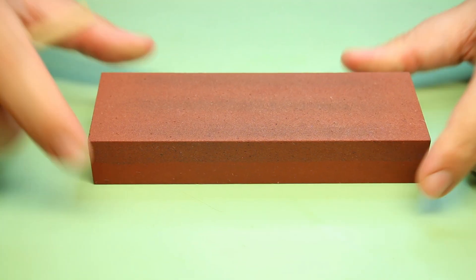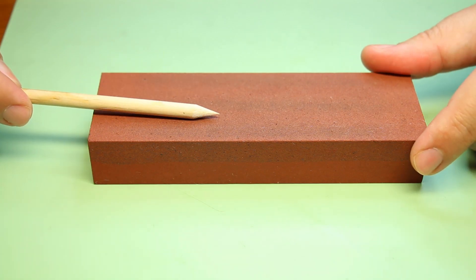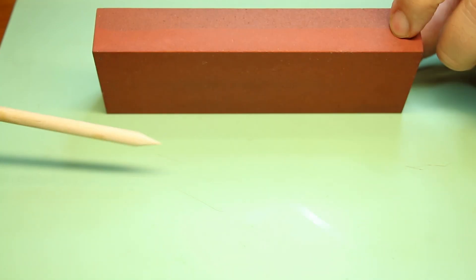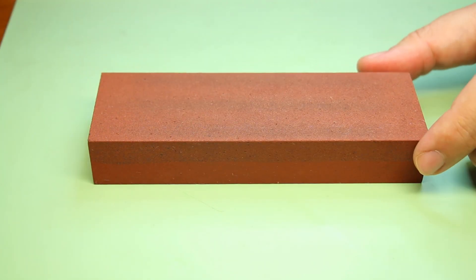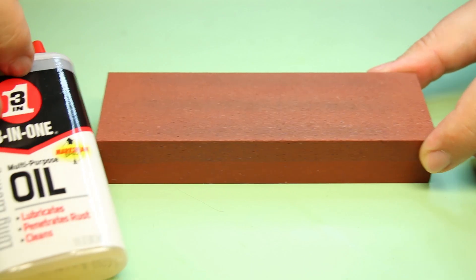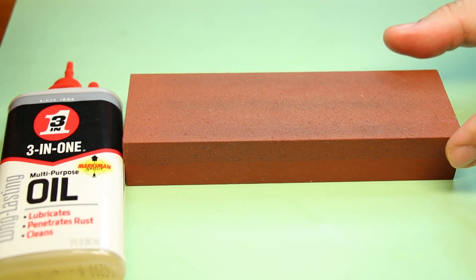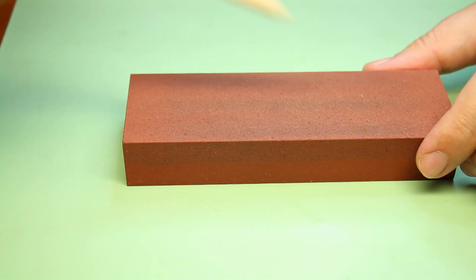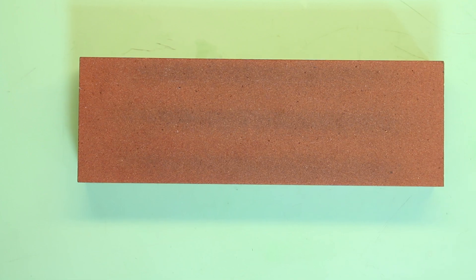So moving on to sharpening stones here, I have an India stone which is made from aluminum oxide. This is a fine medium stone, which means it's got a fine grain on one side and a medium grain on the other. If you buy one of these brand new and pour some oil onto the surface, you might find that within a few seconds it will have disappeared off the surface and seeped through to the bottom.